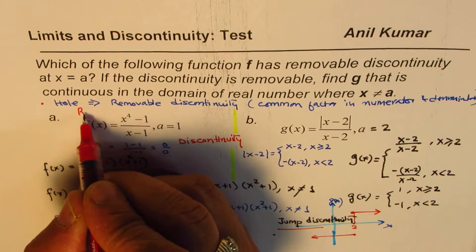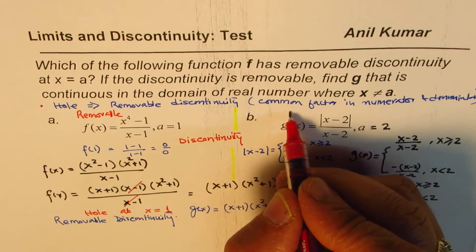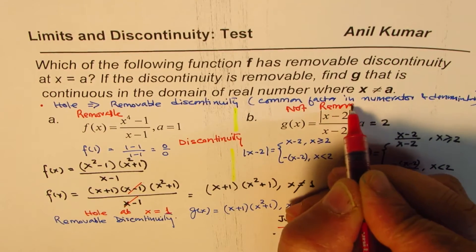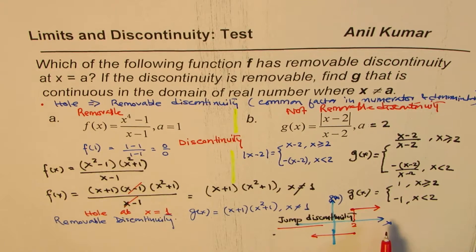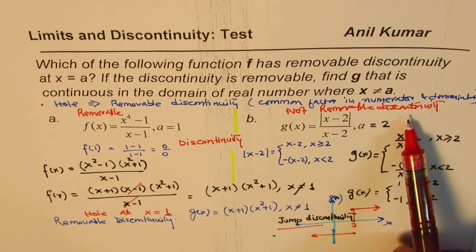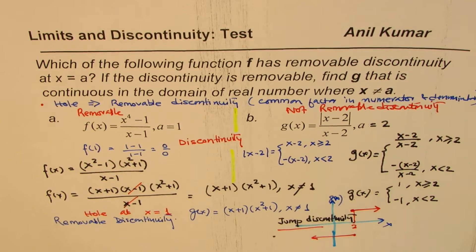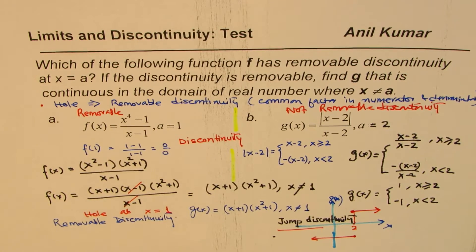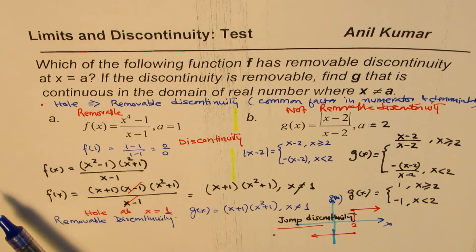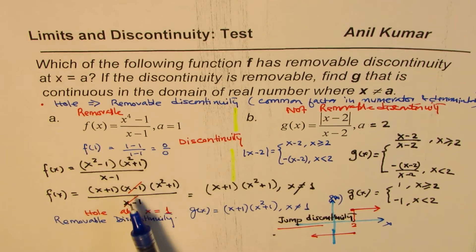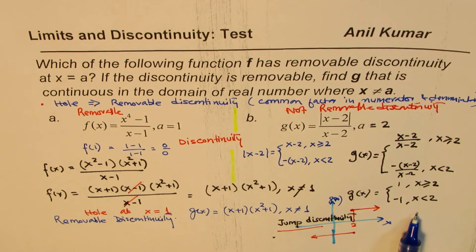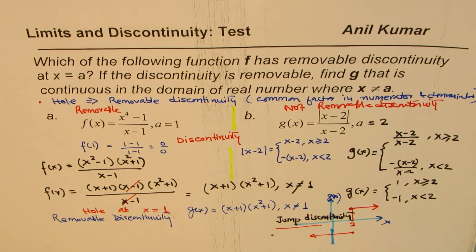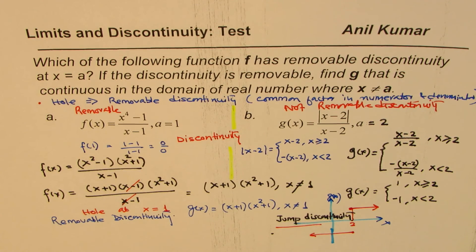So the first function has removable discontinuity, and the second one does not — it has jump discontinuity. Another type of discontinuity that leads to non-removable discontinuity is infinite discontinuity, which you can see in a function like 1 over x. If you are looking for a removable discontinuity, you are looking for a hole at that point — if there is a hole, it can be filled in. If there are jump or infinite discontinuities, the function will not have removable discontinuity. I hope the concept is clear. Feel free to share, subscribe, and post questions. If you like, you can like the video.